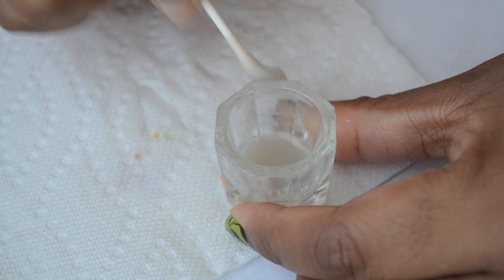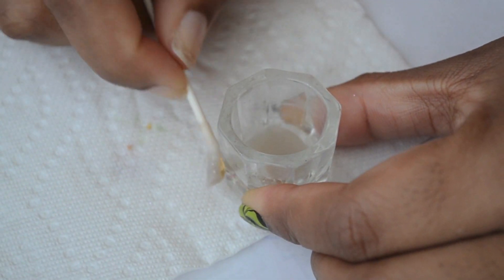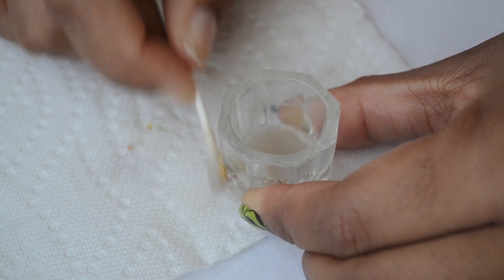I take whatever nail polish remover is left in the dish with a q-tip and wipe down the inside, sides, and top.